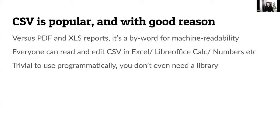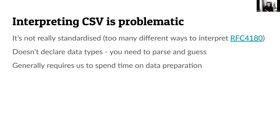If the evolution of tech trends can teach us anything, it's that simplicity will out. We all know CSV isn't perfect — for many, the bar is set too low. Although the Internet Engineering Task Force published a standard, it's not particularly strict, and you're still forced to handle many different interpretations in the wild. Parsers typically have to resort to trial and error. CSV also doesn't declare data types or provide any promises about the contents or its interpretation, so when working with CSV you inevitably have to devote time to data preparation.